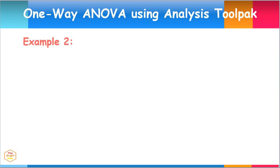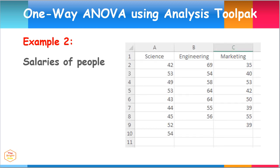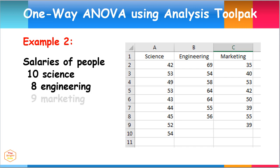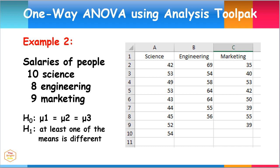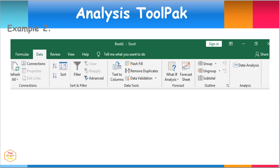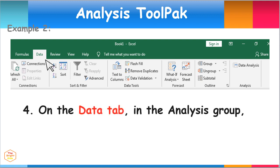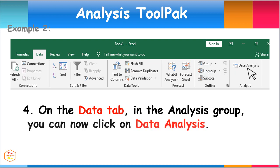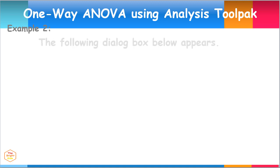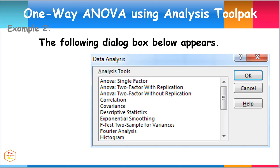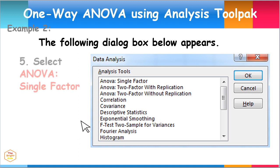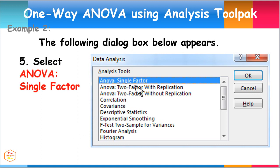Let's have another example. In this case, we will use the salaries of people with various degrees: 10 in Science, 8 in Engineering, and 9 in Marketing. The null hypothesis states that all the means of salaries are equal, while the alternate hypothesis says that at least one of the means is different. Now click on the Data tab menu, then in the Analysis group click on Data Analysis. Select ANOVA Single Factor and click OK.